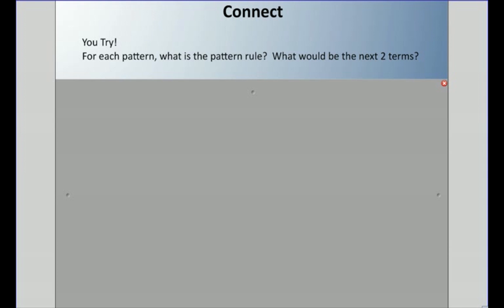All right. I'm going to get you to try one. For each pattern, what is the pattern rule? And what would be the next two terms? Five, seven, nine, 11, 13, 15, 17. Remember, it's a pattern rule. What are the next two terms? I'm going to pause there. I want you to think about that for a sec. Well, I noticed that it's an increasing pattern. It's going up by two each time. So I'm going to say the pattern rule is start at five. That's important. You always should say where you start. Start at five, add two each time. Well, the next two terms would be 19, 21.